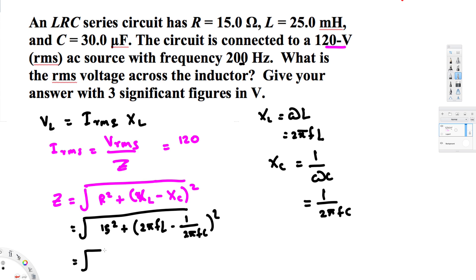Plugging in the values: 15 squared is 225. Then 2π times frequency 200 times the inductance 25 millihenries — that is 25 times 10 to the power of minus 3.